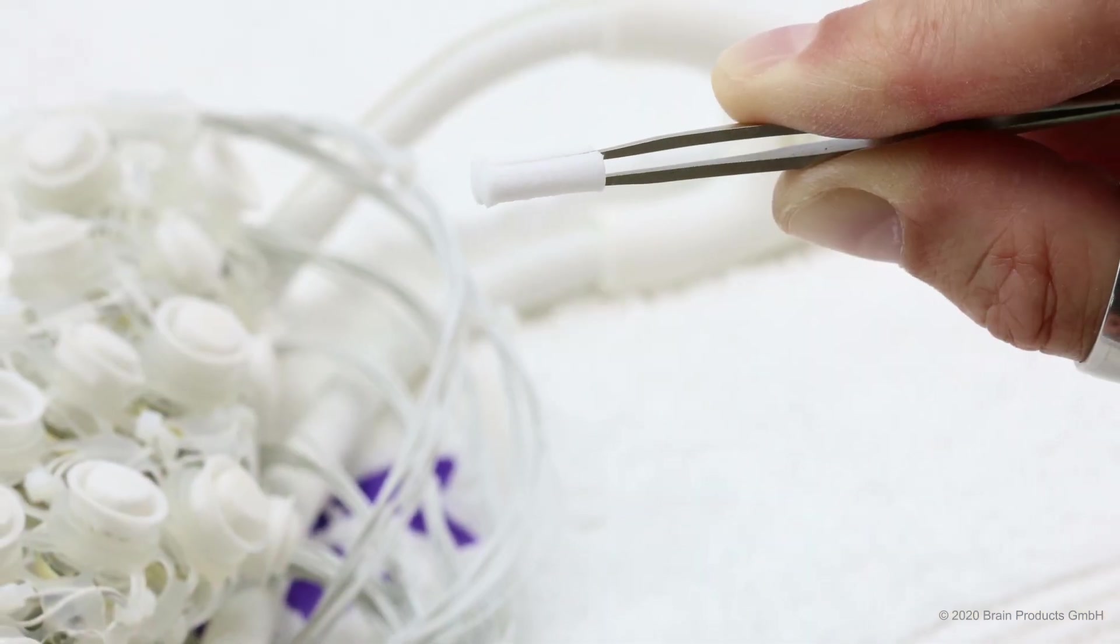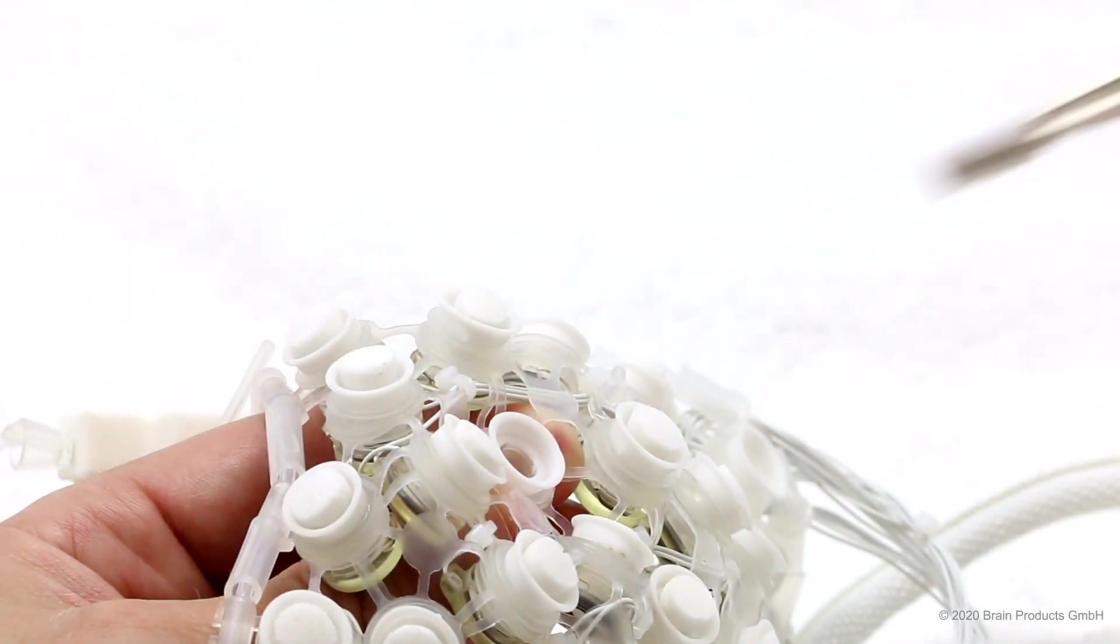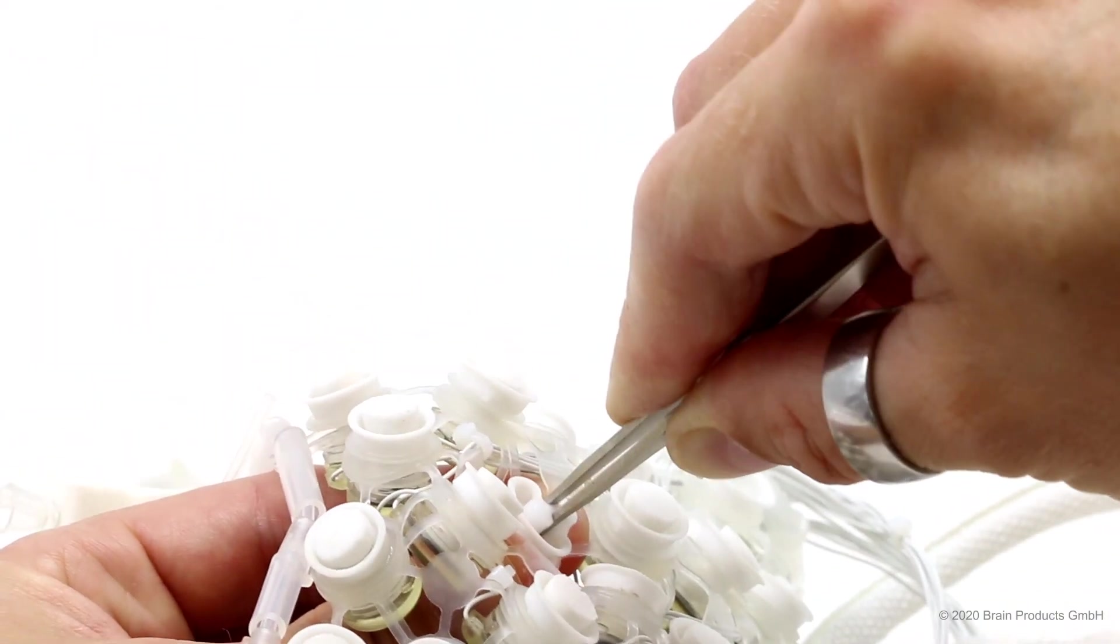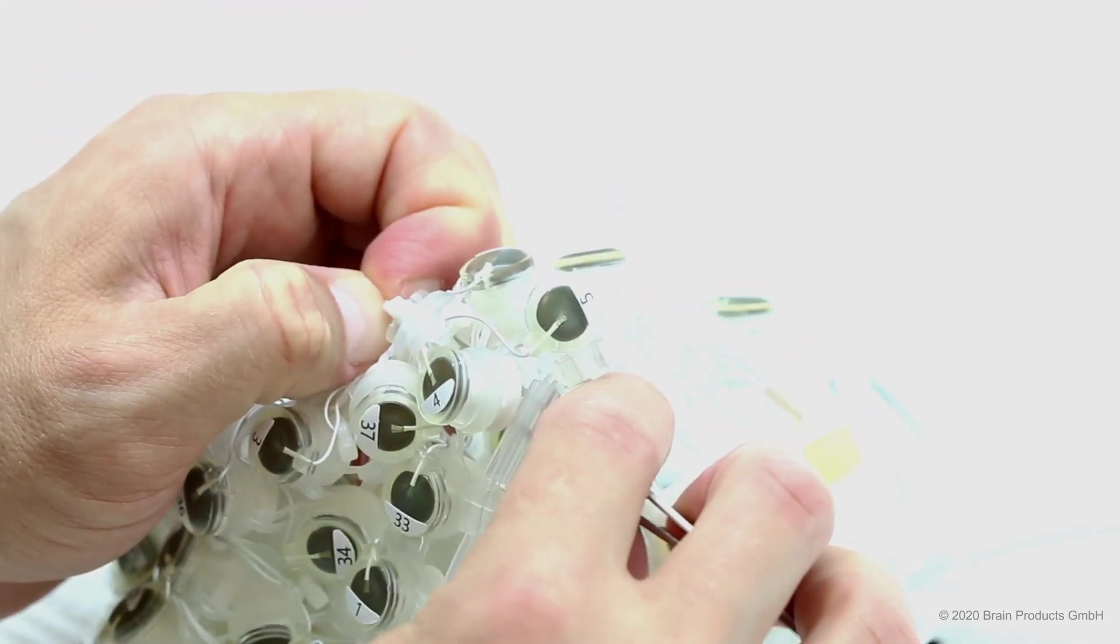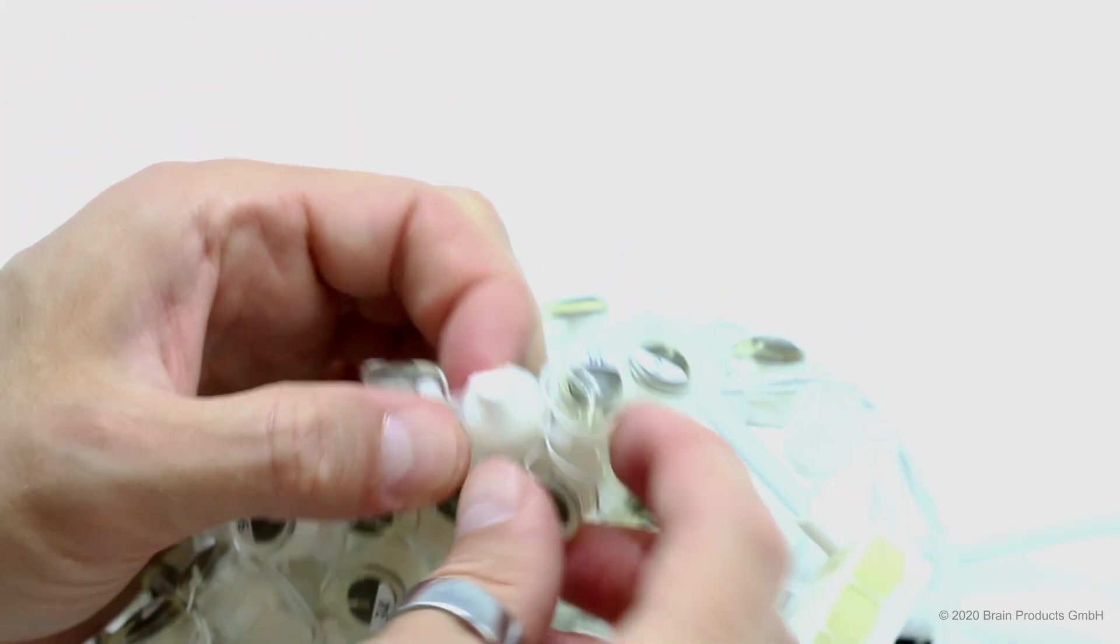Using the tweezers, grab the new sponge and put it through the opening of the electrode holder. Hold the sponge in place while retracting the tweezers and make sure it is aligned in the holder.